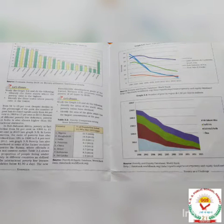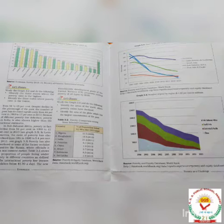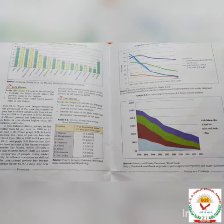Growth also increases government revenues, and consequently the government could afford programs for poverty reduction. Targeted anti-poverty programs include: Mahatma Gandhi National Rural Employment Guarantee Act 2005, Prime Minister Rojgar Yojana, Swarna Jayanti Gram Swarozgar Yojana, Pradhan Mantri Gramodaya Yojana, and Antyodaya Anna Yojana. These two strategies are complementary to each other.